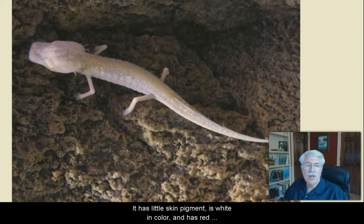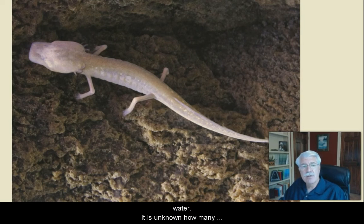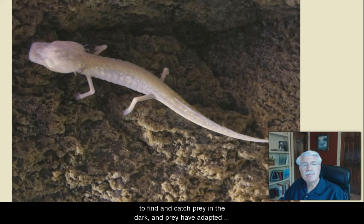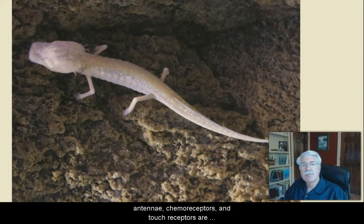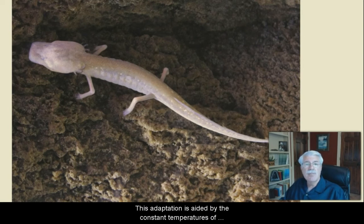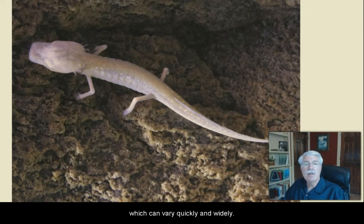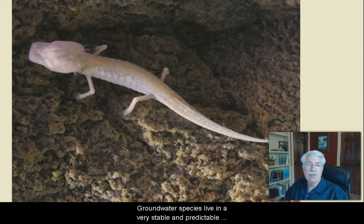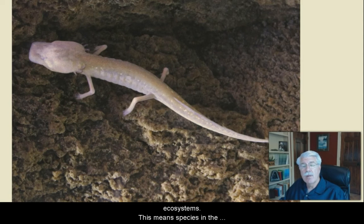It also has very little skin pigment. Its color is white and in some places clear — the skin is just clear right through. And it has red external gills that are used to get dissolved oxygen from the water. It's unknown how many Texas blind salamanders really exist. In these deep underground waters, predators have adapted ways to find and catch prey in the dark, and prey have adapted ways to escape. Sensory adaptations such as antennae, chemoreceptors, and touch receptors are highly developed in these underground-dwelling species. These species also have a very low metabolism, allowing them to live on very little food. This adaptation is aided by the constant temperatures of aquifer waters, compared to surface water temperatures, which can vary very quickly and widely. Groundwater species live in a very stable and predictable environment.